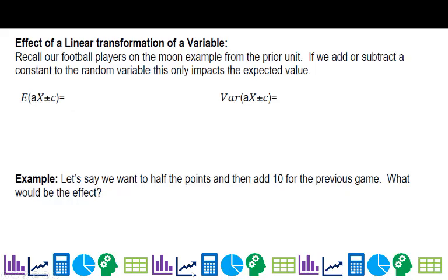If you remember our football player example on the moon from a prior unit, if we add or subtract a constant to the random variable, this only impacts the expected value. So if I have a variable x, and then go a times x plus or minus some c value, I can calculate my new expected value as a times E(X) plus or minus c. Variance is a little different.